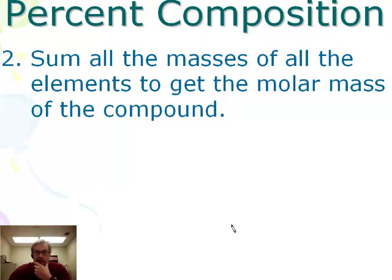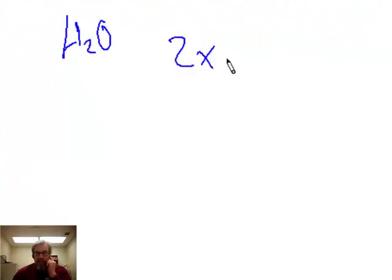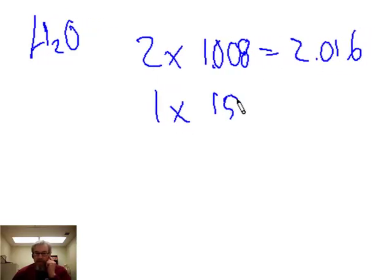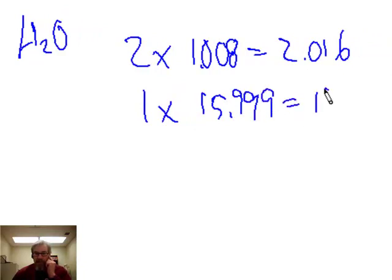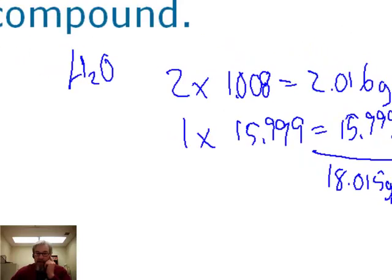Once you've got that figured out, you know the mass of everything in there. Sum them all up to get the total. With H₂O, two times the molar mass of hydrogen, which is 1.008, gives 2.016 grams, and one times the molar mass of oxygen is 15.999 grams. That's how many grams of hydrogen and how many grams of oxygen. Summing these gives the mass of the whole compound: 18.015 grams per mole.